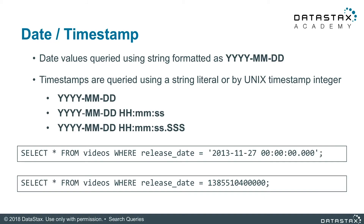Since you're now an expert on CQL search keywords, let's look at date and timestamp. Date values can be queried using a string formatted as year, month, day. Timestamps are queried using a string literal or a Unix timestamp integer. Unix time is approximately the number of seconds that have passed since January 1st, 1970. For timestamps, any precision beyond millisecond is not captured in the search index, so you can only effectively query to millisecond precision.